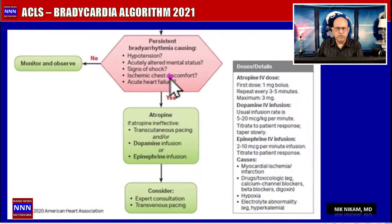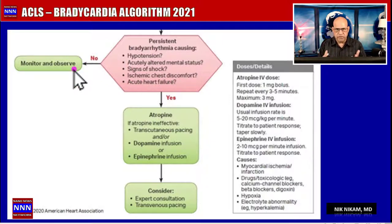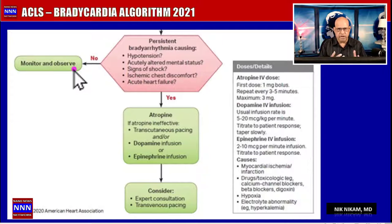Once we stabilize the patient medically, we look for symptoms of severe bradycardia such as hypotension, altered mental status, signs of shock, ischemia or chest pain, ongoing myocardial infarction, or acute heart failure. If the patient has none of these symptoms, we monitor them and address possible causes. If it's drug-related, we can reduce dosages — though many times these patients need beta blockers and calcium channel blockers to control their heart rate in atrial fibrillation.